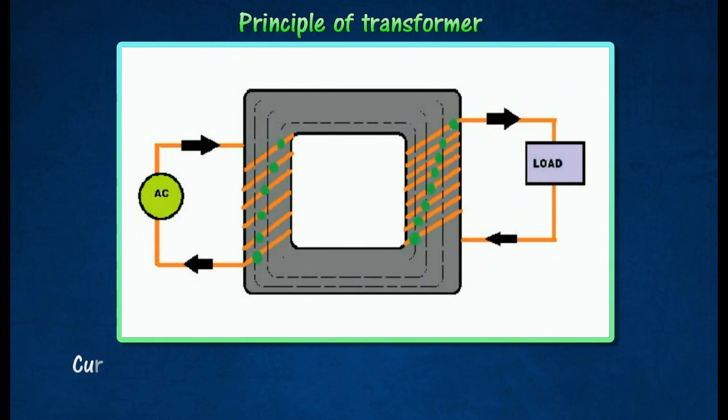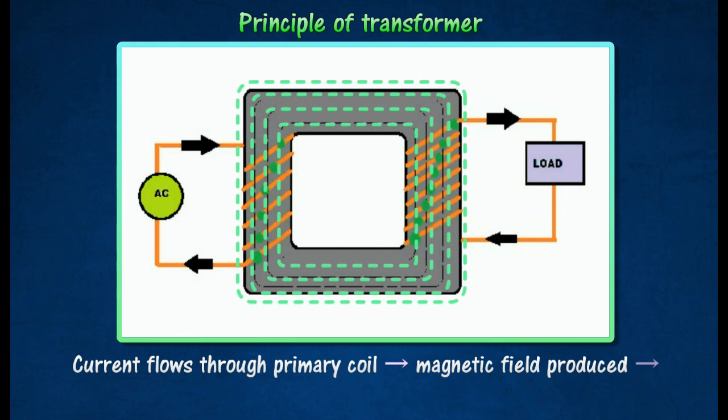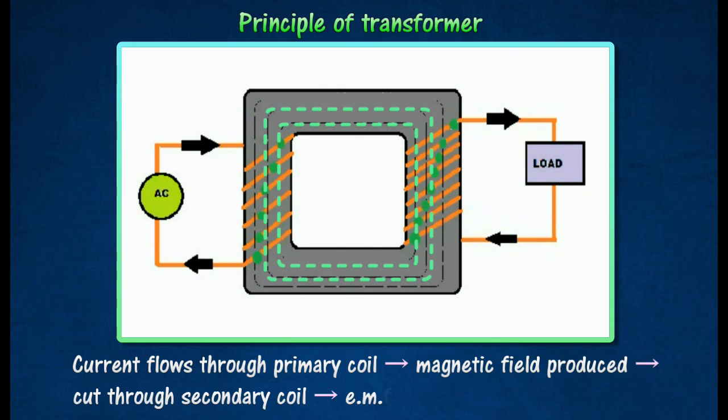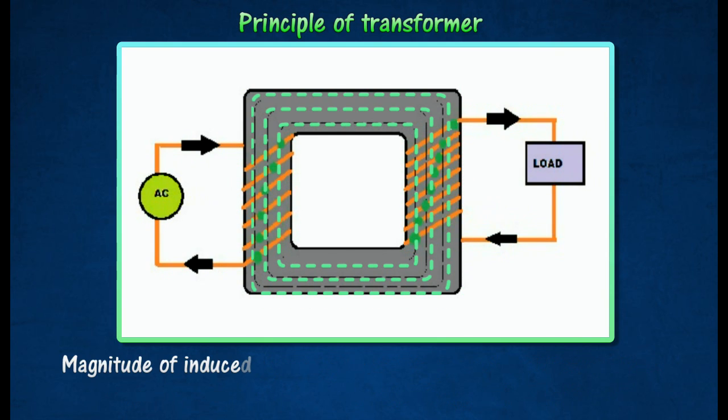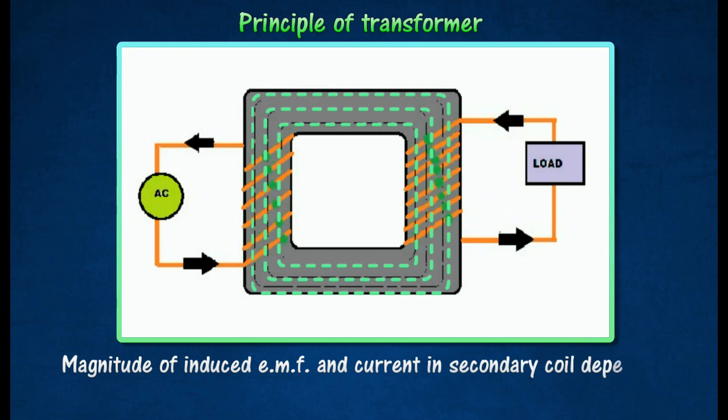When an alternating potential difference is supplied, the resulting alternating current in the primary coil produces a changing magnetic field around it. This changing field induces an alternating current in the secondary coil.